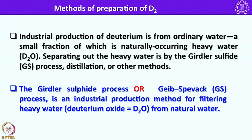The Girdler sulfide process, also known as the Gibbs-Pavik process, is an industrial production method for filtering heavy water from natural water. Several deuterium compounds have been made using D2O as the major source.